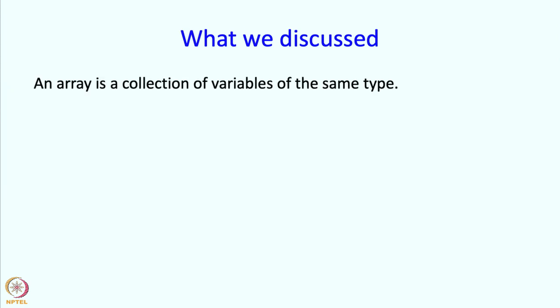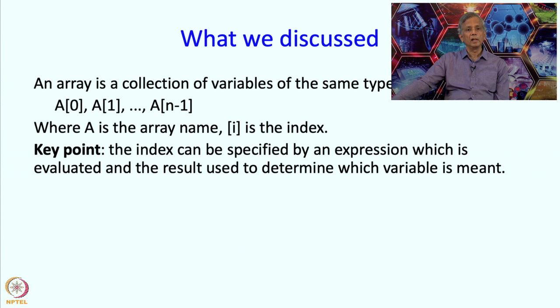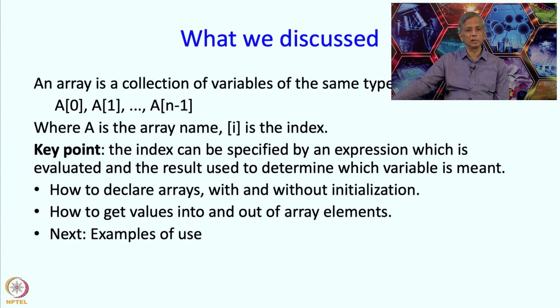So what have we discussed so far? We have said that an array is a collection of variables of the same type. If the number of elements in the array is n, then the elements are named a[0], a[1], through a[n-1]. So a is an array name and i is called the index. The important point is that the index can be specified by an expression and the expression is evaluated and the result is used to determine which variable of this collection you mean. So we saw how to declare arrays with and without initialization, how to get values into and out of array elements and next we are going to take some examples of use of arrays. So we will take a quick break.